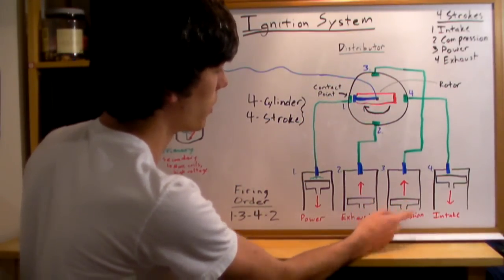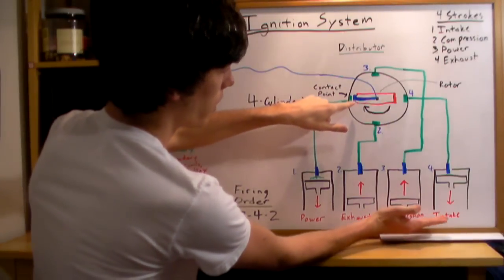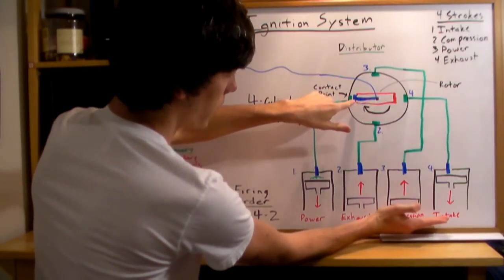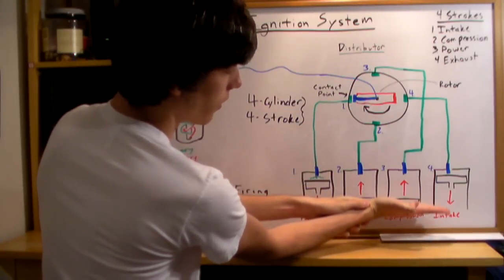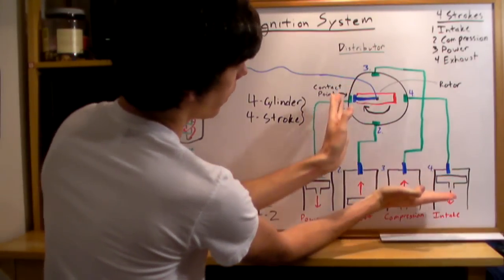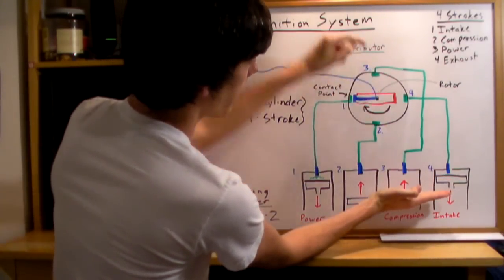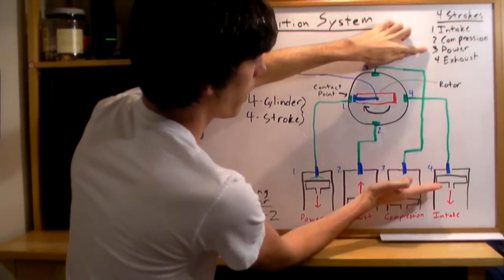The third cylinder is going to be in compression when it's right here, when the rotor is right here. Then as it rotates to here, that compression, that cylinder, the piston is going to move up and it'll be at three now. Then three will be at a power stroke.